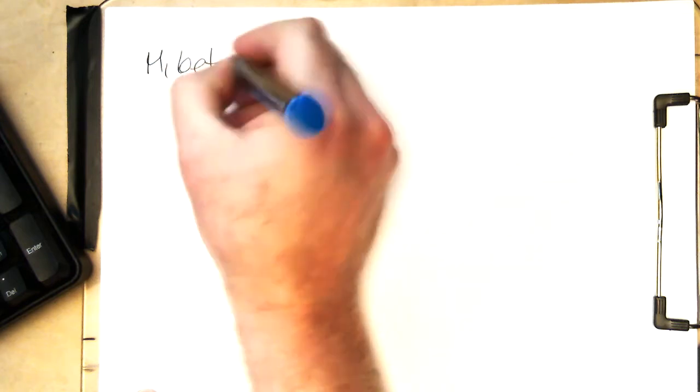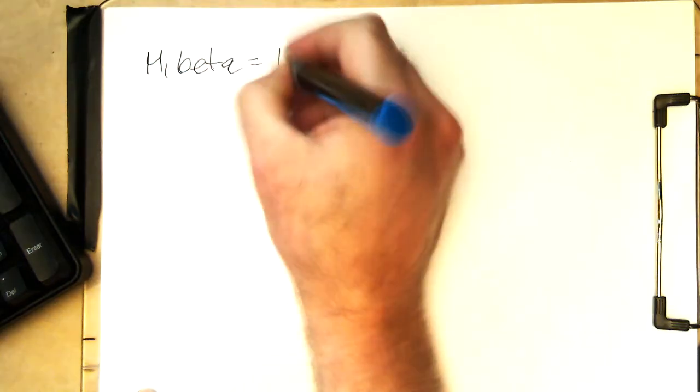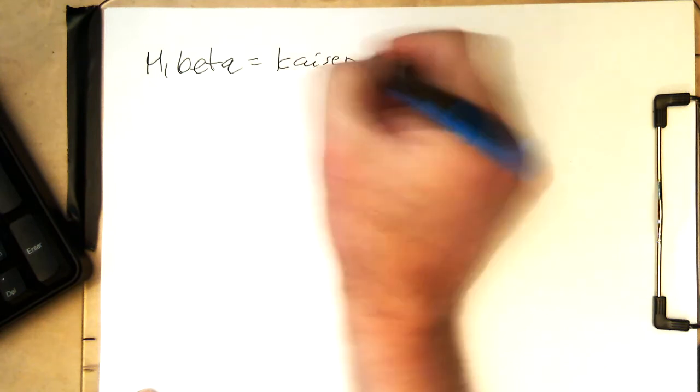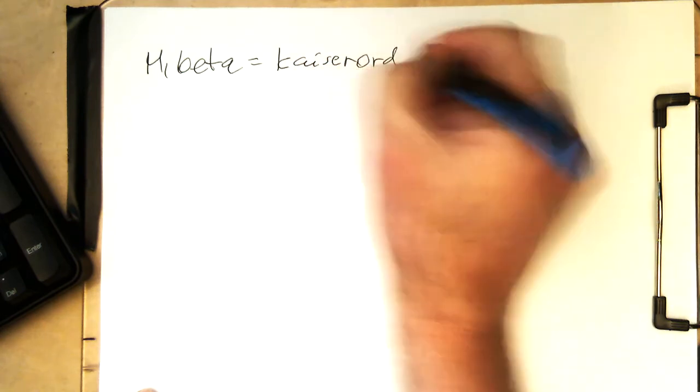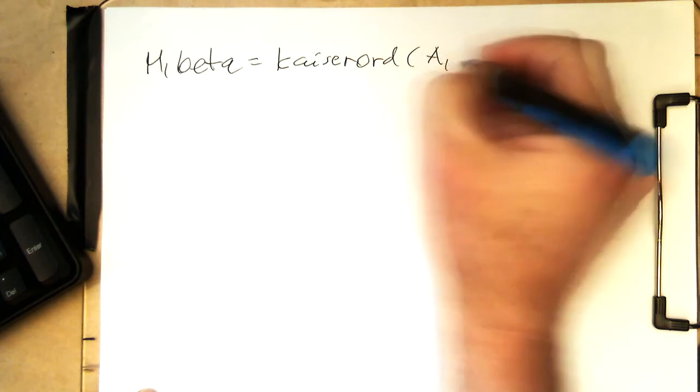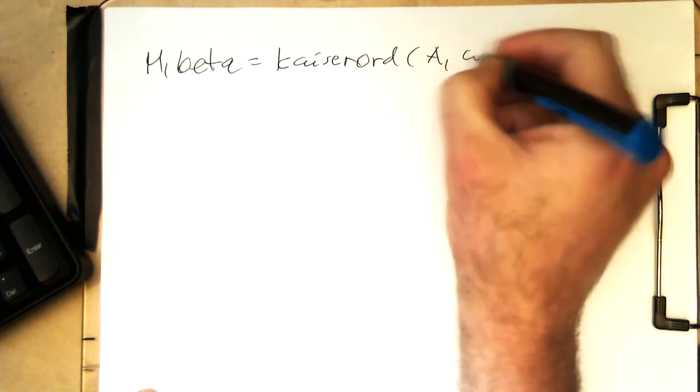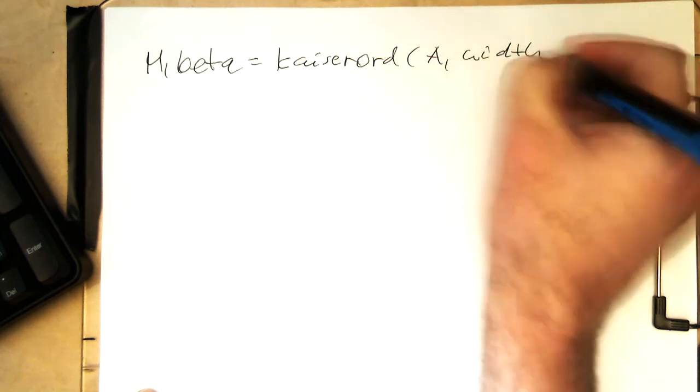So let's write this here down again. So M comma beta Kaiser ord, then A comma width.